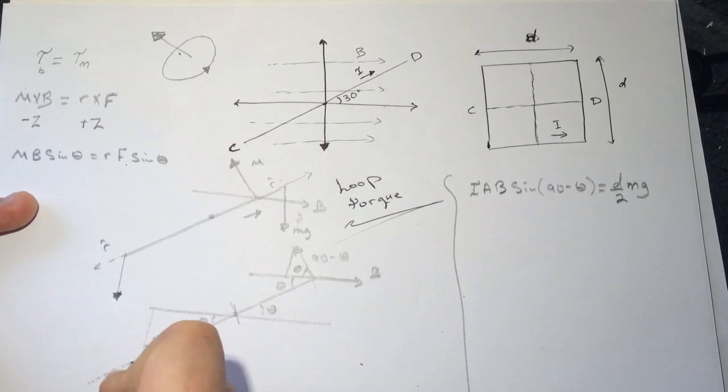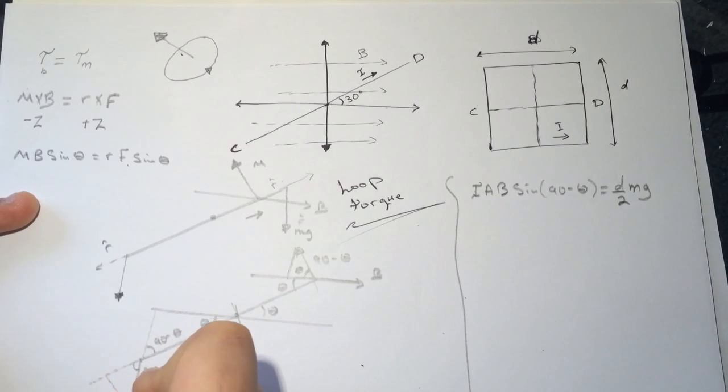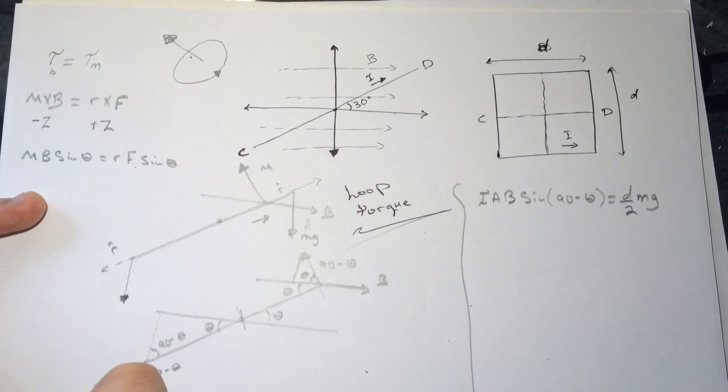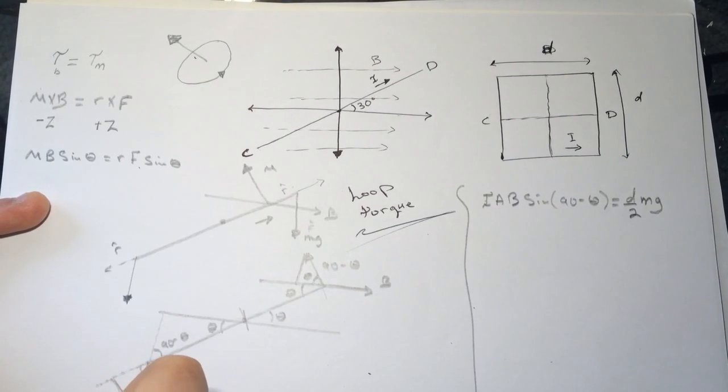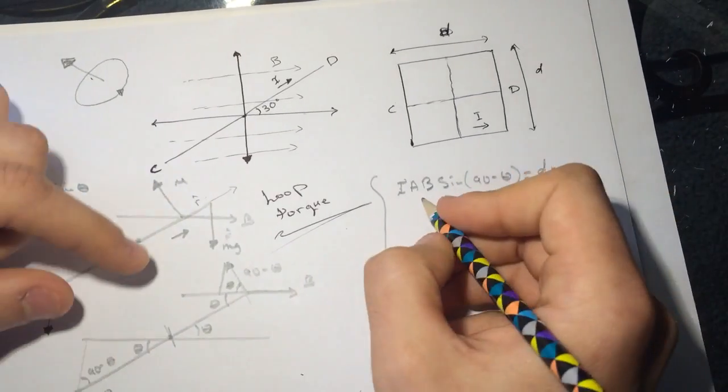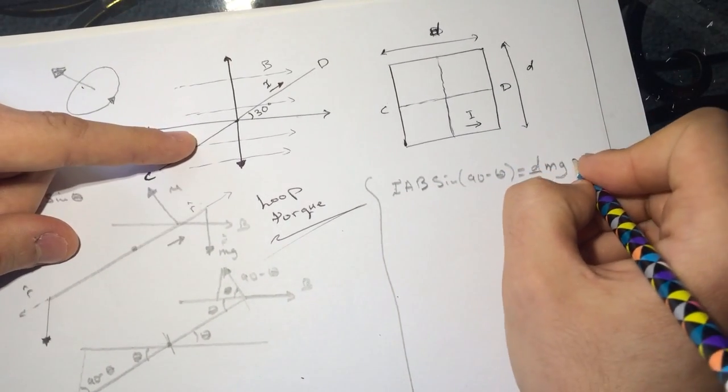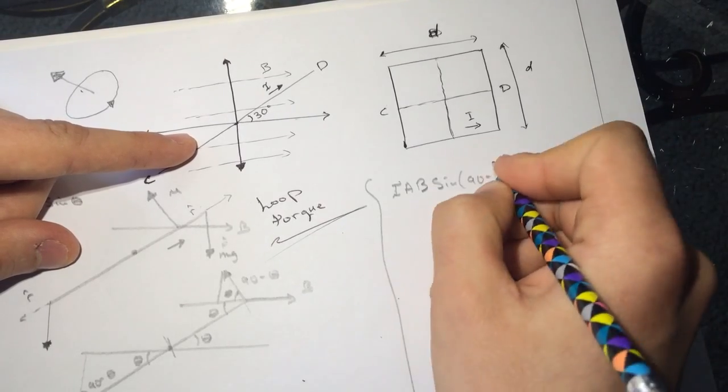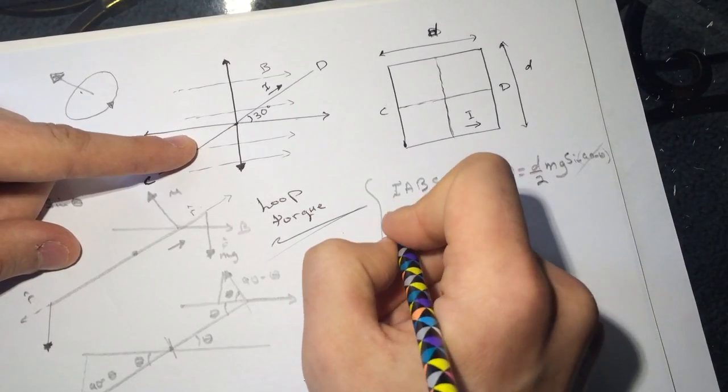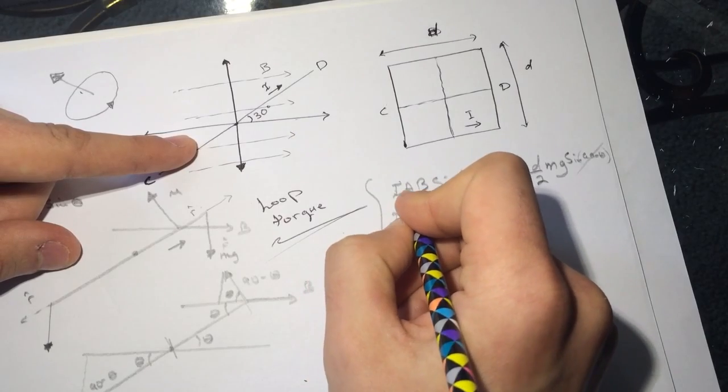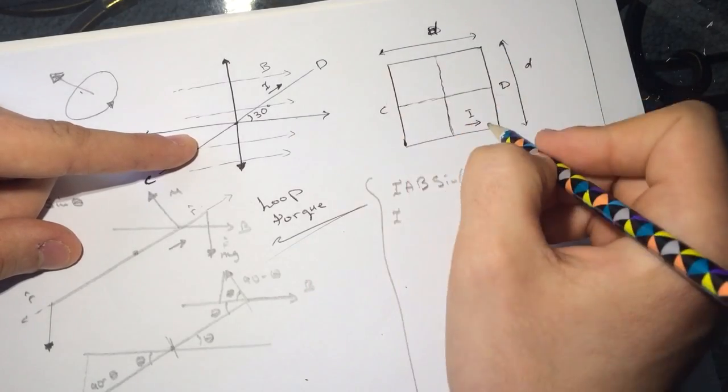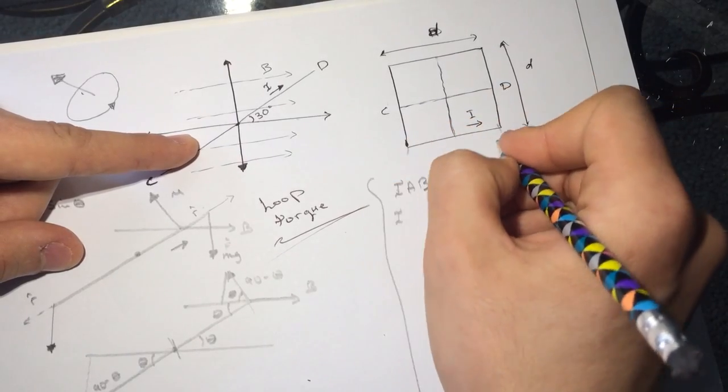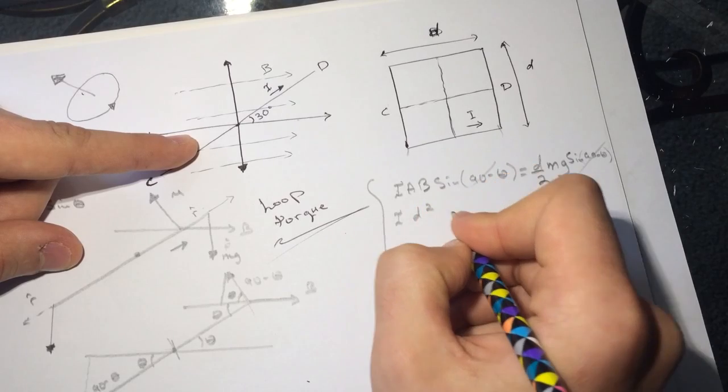This is going to be 90 minus theta, so we need this component, which is sine of 90 minus theta. Now we can actually drop the sine - this is sine 90 minus theta, so we can cancel. One d - so this is d squared.